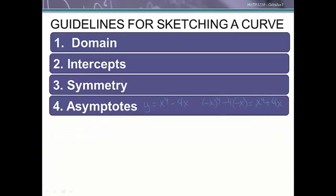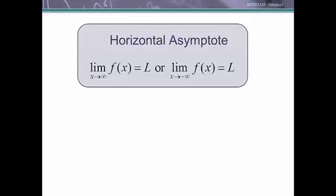Now let's look for asymptotes. Now that we know calculus and limits, we can officially define asymptotes in terms of limits. A horizontal asymptote is a line the graph heads towards as we go out on the ends. Officially: the limit as x approaches infinity of f(x) equals L, or the limit as x approaches negative infinity of f(x) equals L. We could have two different horizontal asymptotes — one value heading towards negative infinity and a different value heading towards positive infinity, or they could match.